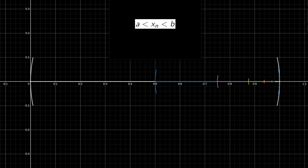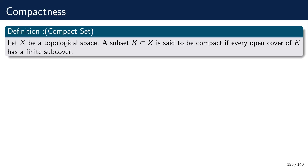Now we'll see a more elaborate example with a proof. The discussion so far has motivated us to define compactness. A topological space is the most general context in which we can talk about open sets. A compact subset of a topological space is one where for every open cover of the set, we can always find a finite subcover. The Heine-Borel theorem says that the closed and bounded intervals of the real line are compact sets. This compactness is the most important property of the closed and bounded interval, and from it all the great properties of continuous functions on those intervals arise.